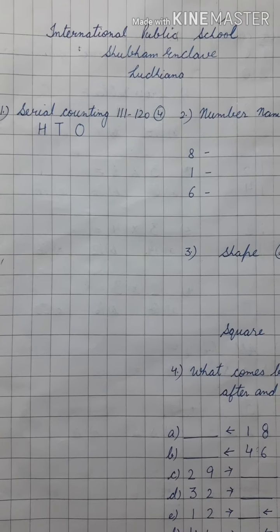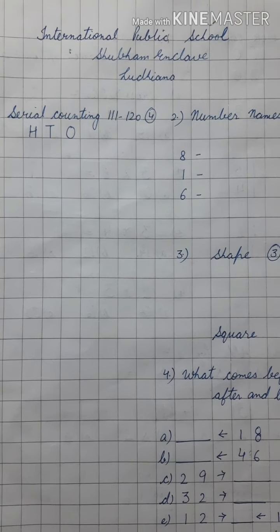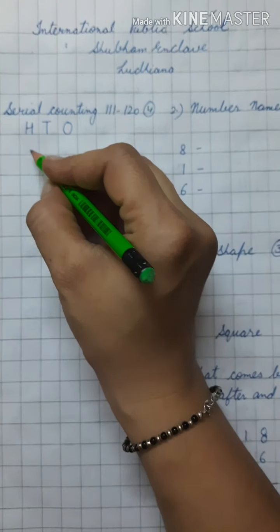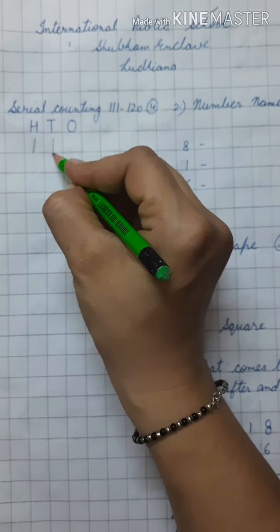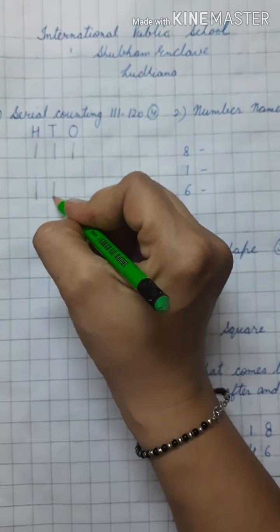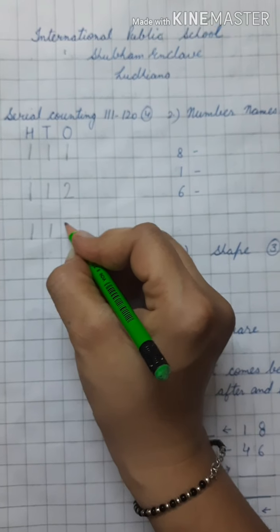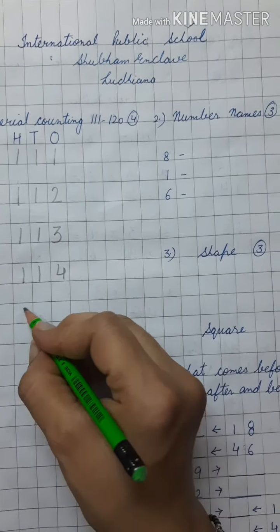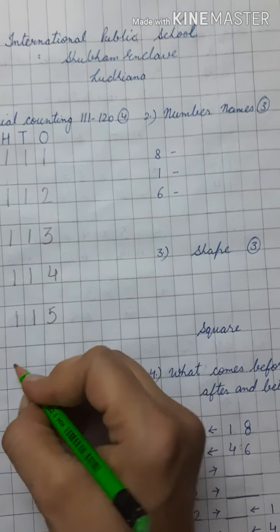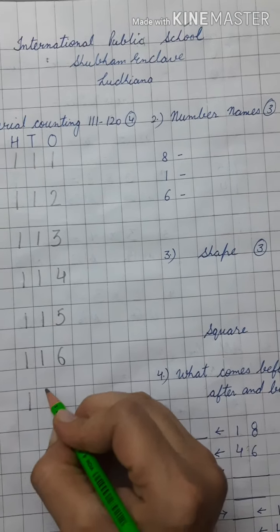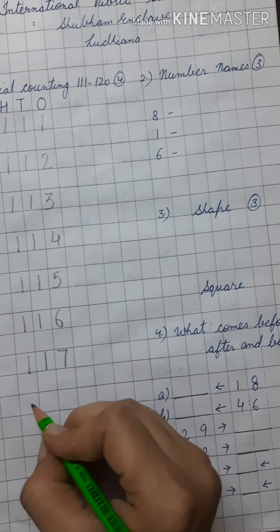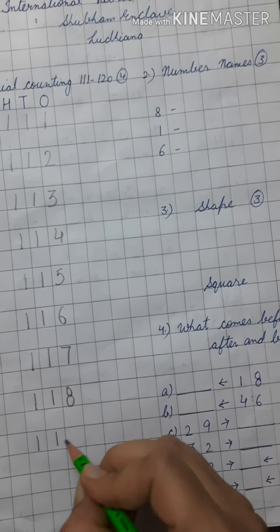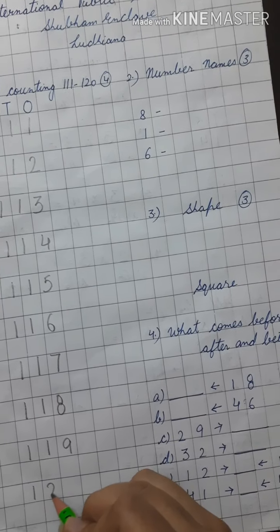In first question, you have to write serial counting. Today I am going to write serial counting from 111 to 120. 111, 112, 113, 114, 115, 116, 117, 118, 119, 120.